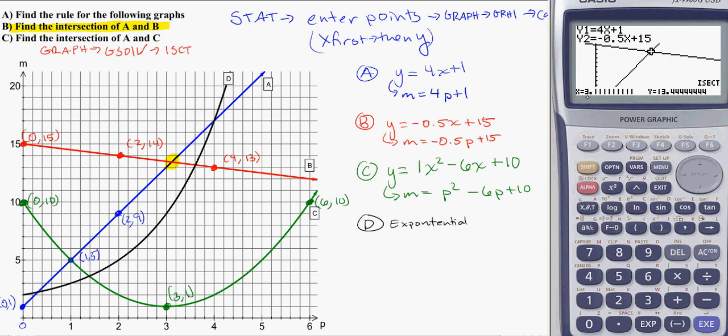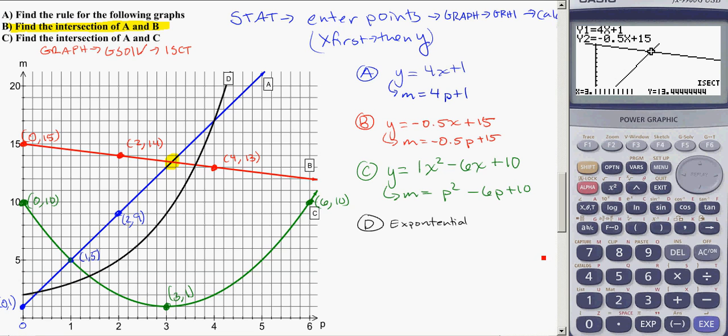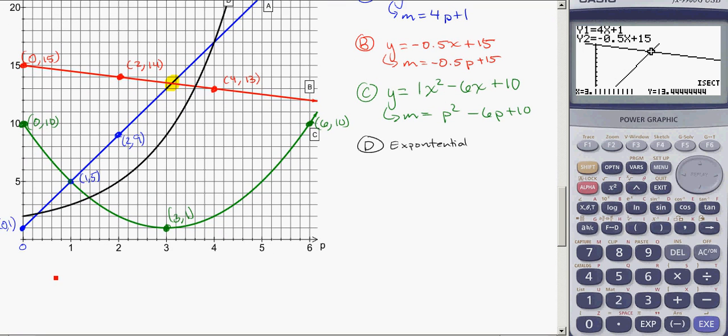And that's going to be my intersection. Again, it gives it to me as a point. So here I see that's 3.111 for X and 13.44 for Y. So if I'm going to write out my intersection between A and B, it's going to be at the point, and I want to write it as a point X comma Y, 3.11 rounding comma 13.44, again rounding. So don't forget to put it as a point X comma Y.